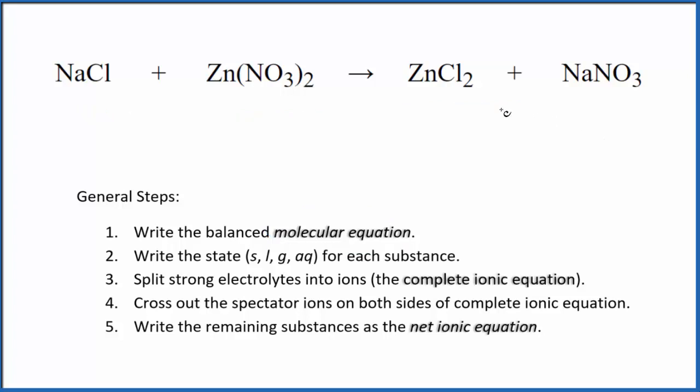This is the molecular equation. I can see that I have one chlorine here and two here, so I'll put a two in front of the NaCl. It balances the chlorines, but now I have two sodiums here and just one here. So I'll put a two here. Those are balanced. We have two nitrate ions. Here we have two nitrate ions. We have zinc and zinc. That's the balanced molecular equation.